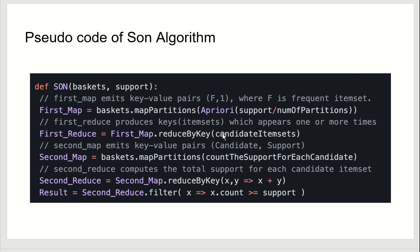Based on what we have understood about the SON algorithm, here is a question: when will an item set become a candidate key? The answer is that an item set becomes a candidate key if it is found to be frequent in any one or more subsets of the baskets. If it is frequent in one or more subsets of the baskets, it is called a candidate key.